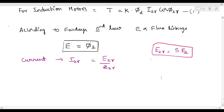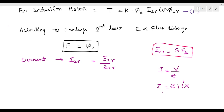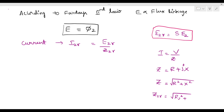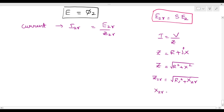Next, i₂r equals E₂r divided by Z₂r. Now, the impedance formula: Z equals R plus jX, and the magnitude Z equals square root of R² plus X². So Z₂r equals square root of R₂² plus (sX₂)², because X₂r equals sX₂.